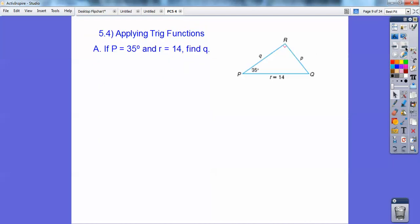All right, so let's apply a trig function. So if P equals 35, and R is 14, find Q. Okay, so that's going to get me a cosine ratio. So I get adjacent over hypotenuse, because I'm looking for this guy right here, and you get about 11.5.